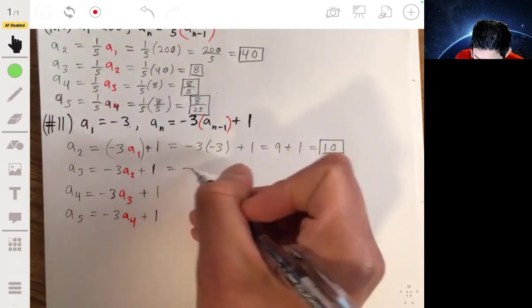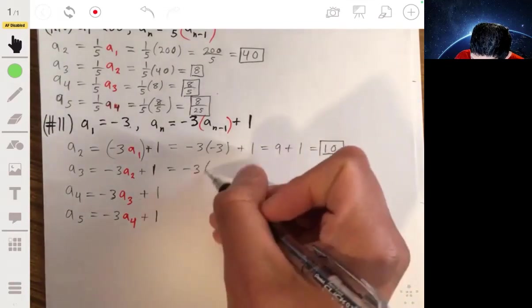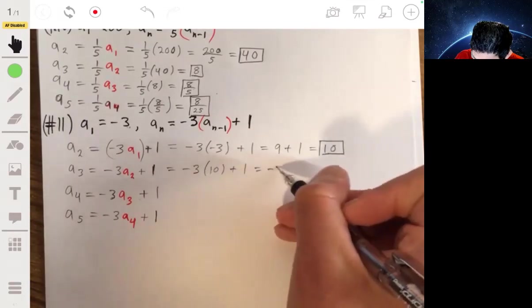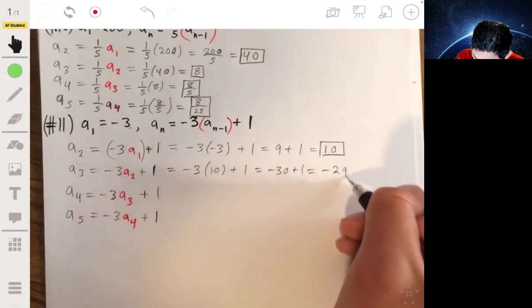a3 would then be negative 3 times a2, which is negative 30 plus 1, which will be negative 29.